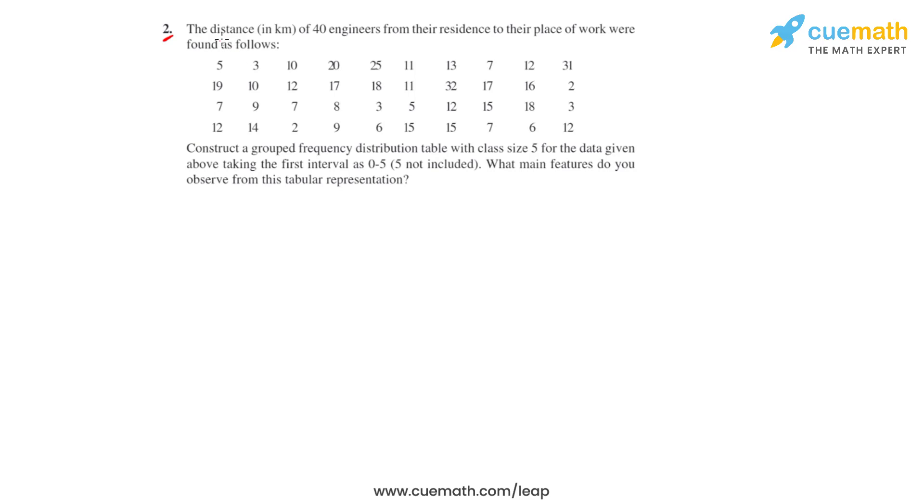Question number 2 says that the distance in kilometers of 40 engineers from their residence to their place of work were found as follows. We have to construct a grouped frequency distribution table with class size 5 for the data given above, taking the first interval as 0 to 5 where 5 is not included. Then we have to tell what are the main features that we observe from the tabular representation.